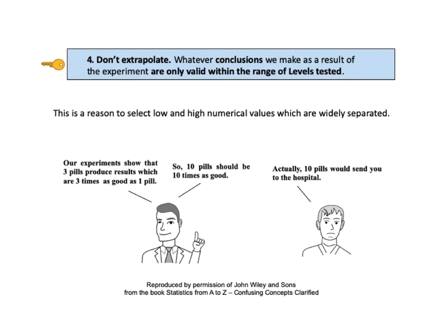Key to understanding number 4 says: don't extrapolate. Whatever conclusions we make as a result of the experiment are only valid within the range of the levels tested. In the cartoon example, one person says our experiments show that three pills produced results three times as good as one pill, so ten pills should be ten times as good — but the other person warns that ten pills would send the patient to the hospital. The range tested is one pill to three pills, so we can't make any accurate statement about ten pills. This is why we should select low and high numerical values which are widely separated and give a wide enough range for our purposes.